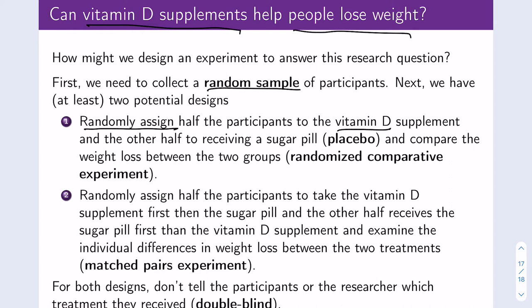The other half might receive a sugar pill, which would essentially be our placebo. Then we would compare weight loss between the two groups. This is what's known as a randomized comparative experiment, and many of the experiments we will talk about are randomized comparative experiments.